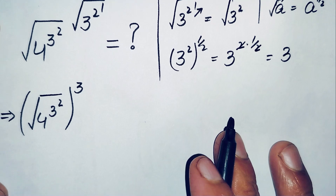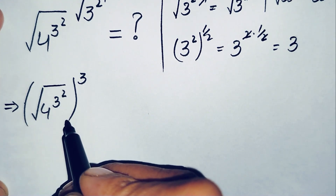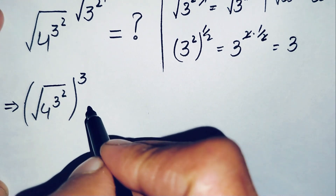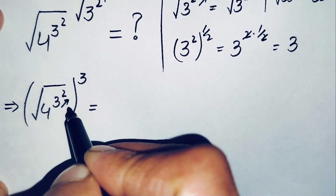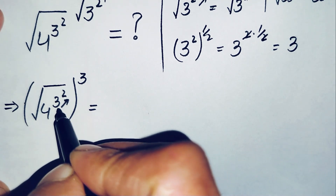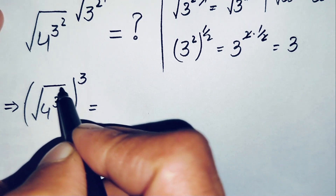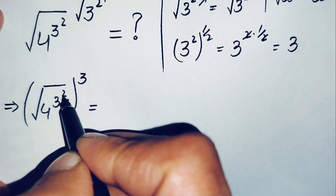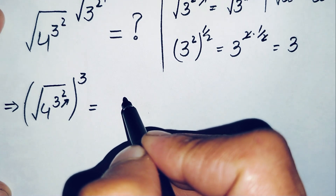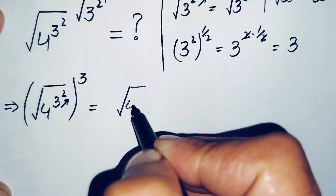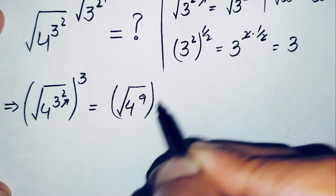Now we will try to find the value of the expression inside the parenthesis. We find the value of 3 raised to power 2. That means multiplying 3 by itself: 3 times 3 is 9. So the value of 3 raised to power 2 is 9. We replace it with 9, so this becomes the square root of 4 raised to power 9, raised to power 3.